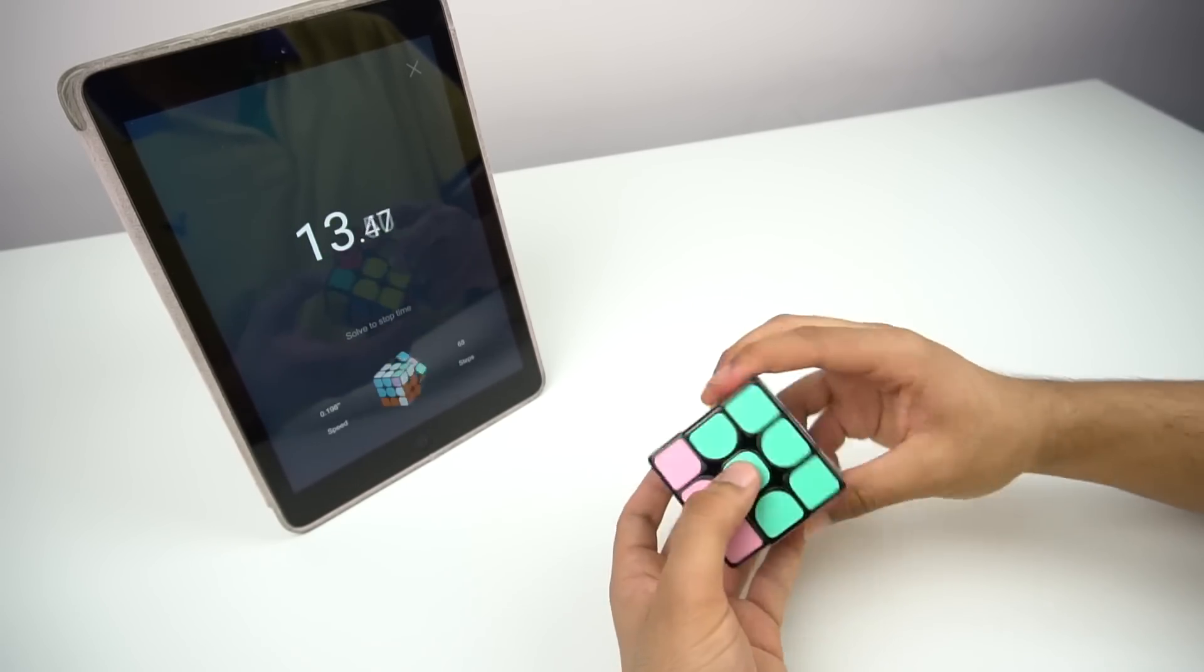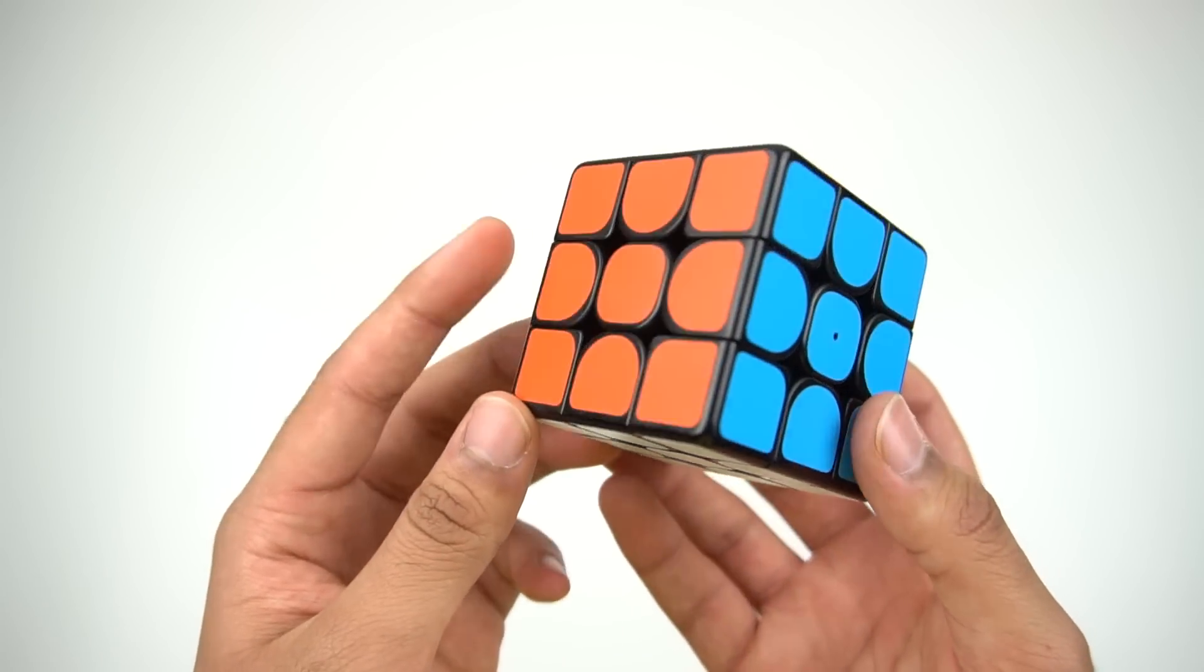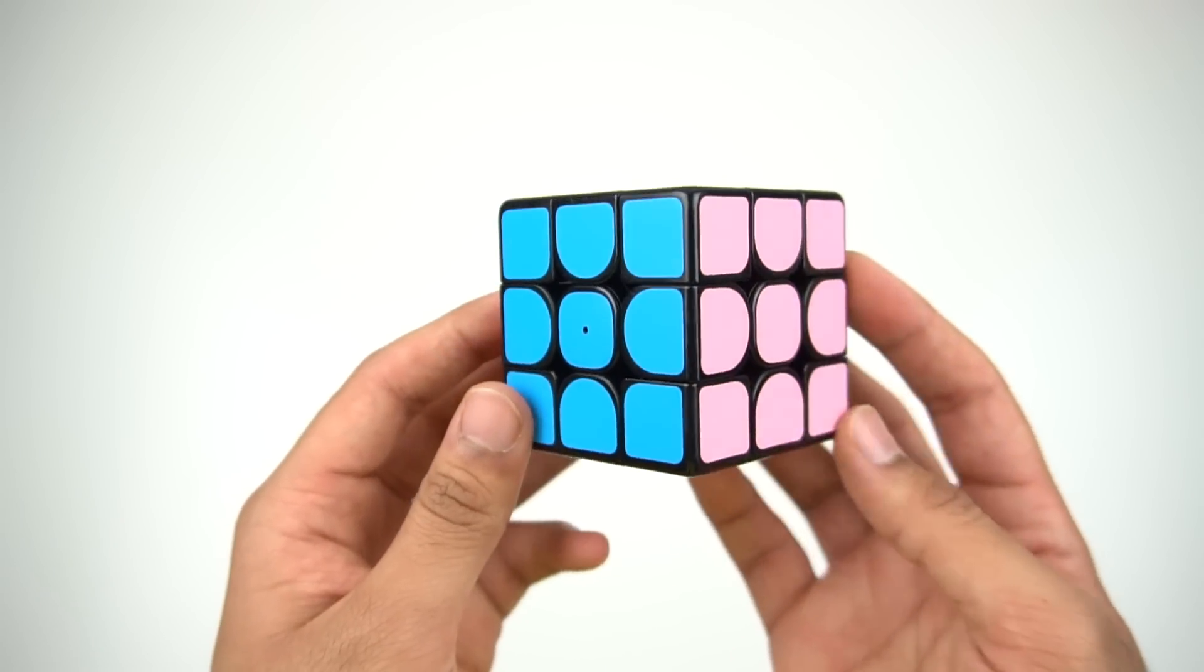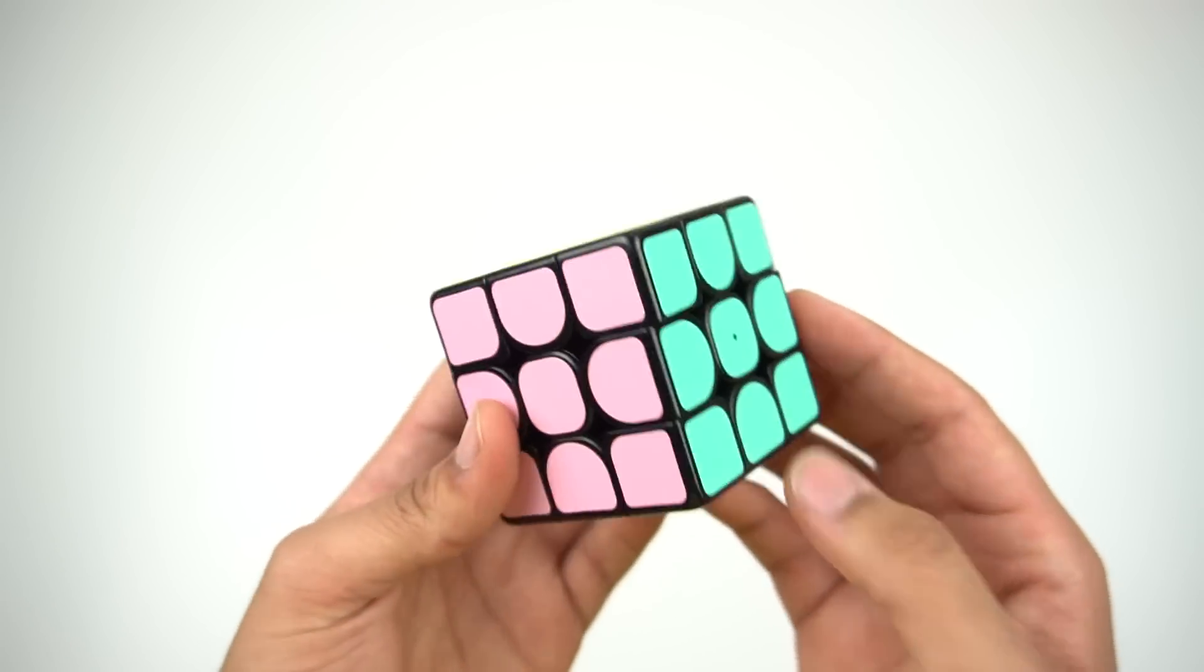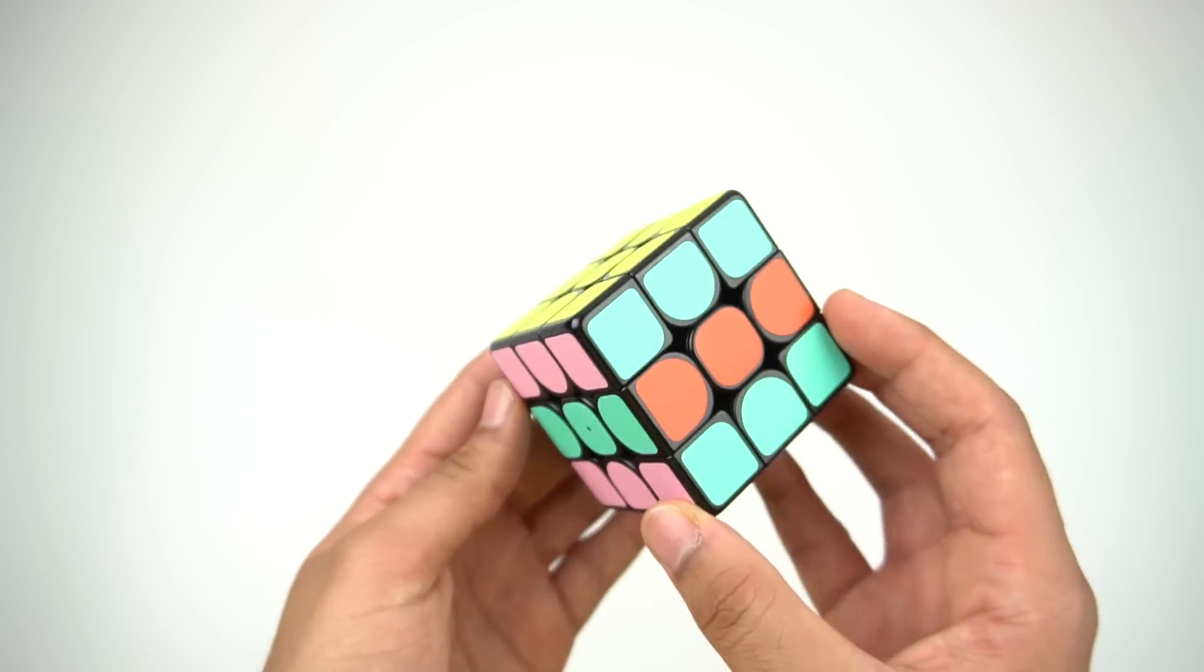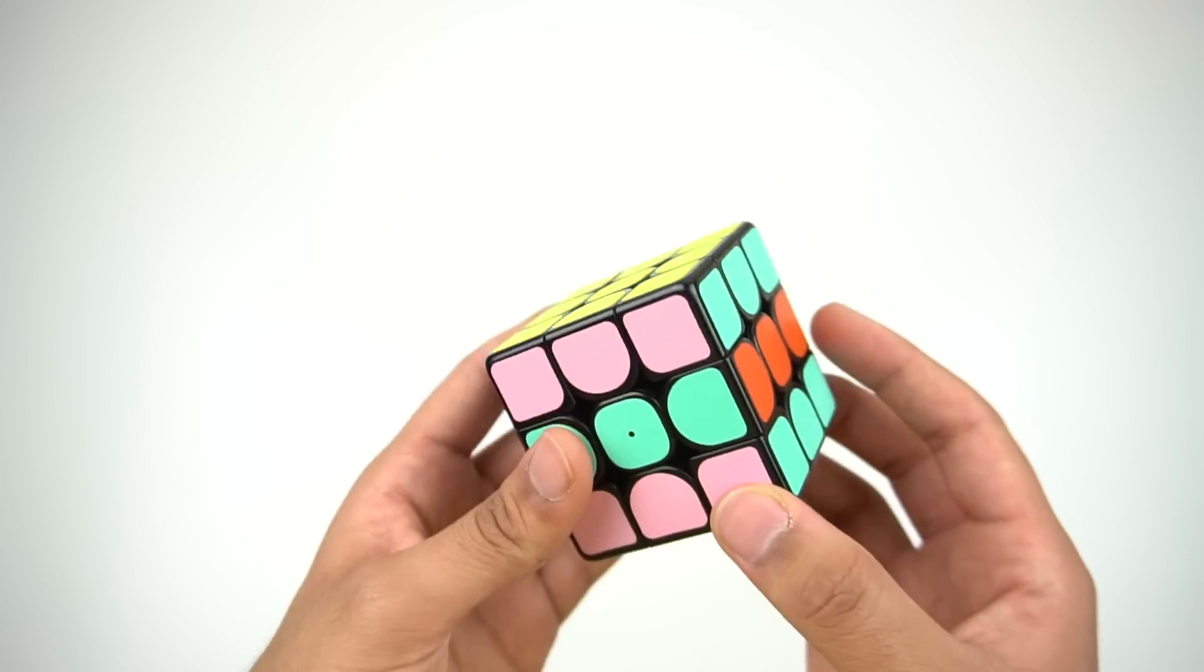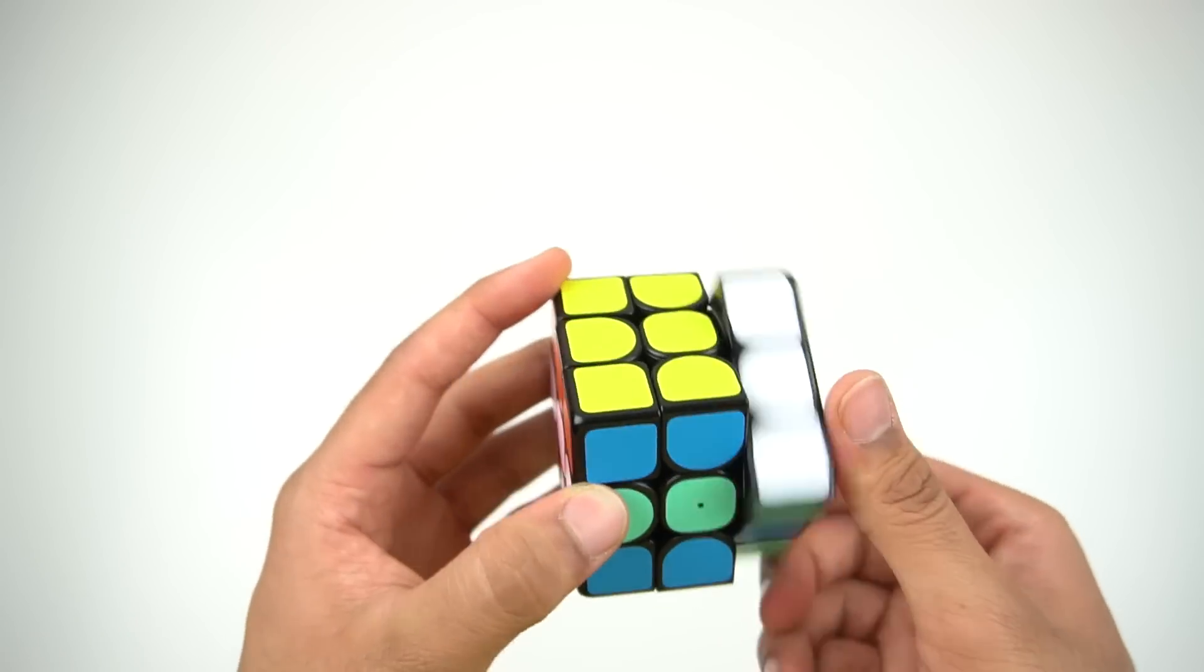By far the worst part about the physical cube though are the sticker shades. The faded orange looks more like a light red, and instead of an actual red, they use a very faint light pink, which is indistinguishable from the very pale light green.